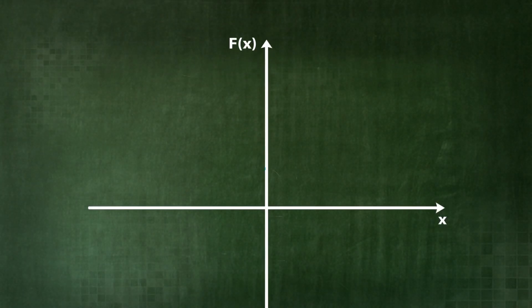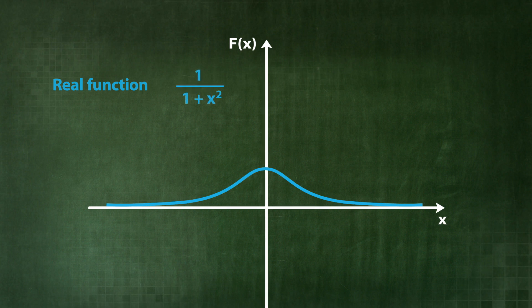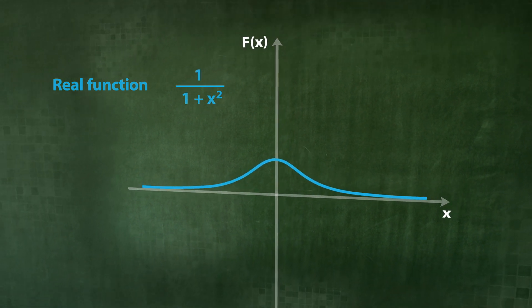What does the complex extension of a real function f look like? For example, for the function f defined as 1 divided by 1 plus x square.